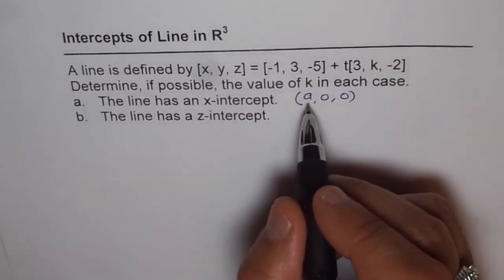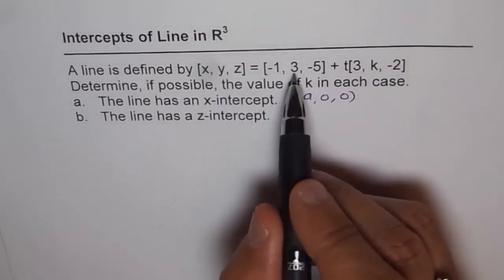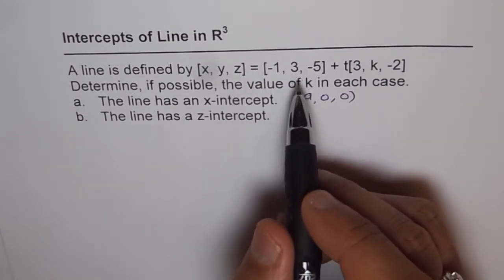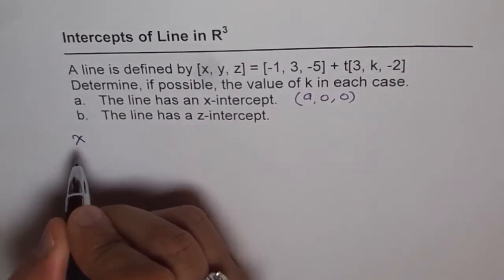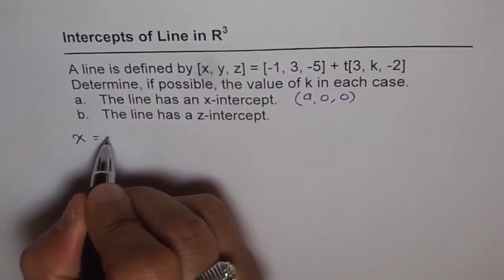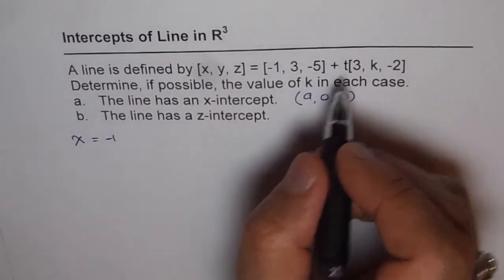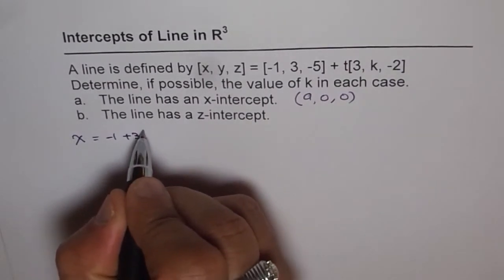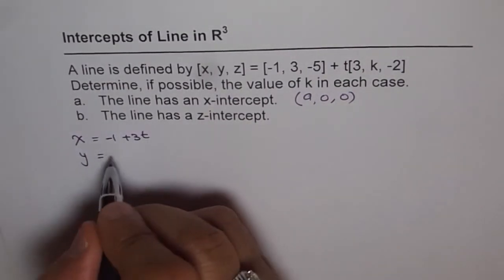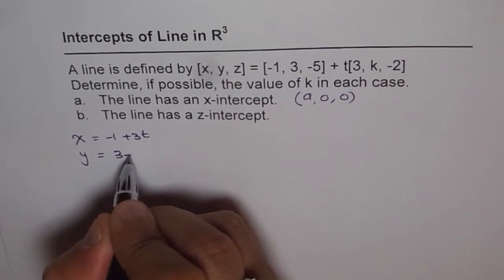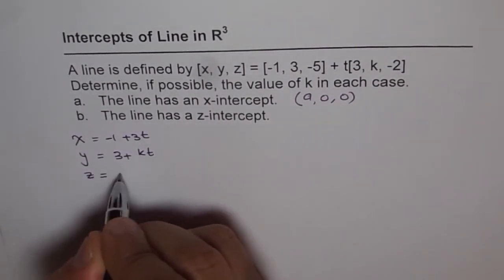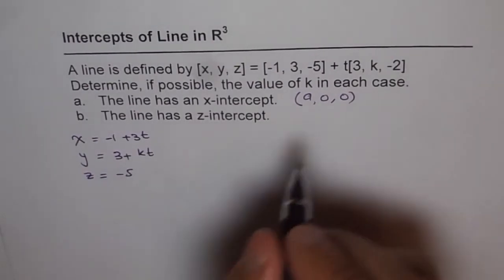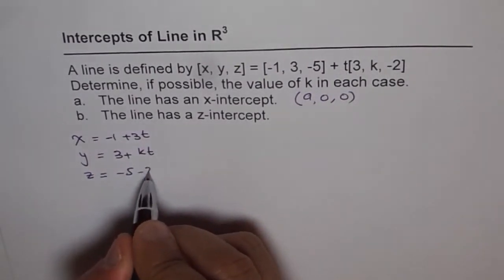Now to find a, what we can do is, the line has to be on this given line. So let me write the general equation of this line, which is: x = -1 + 3t, y = 3 + kt, and z = -5 - 2t.